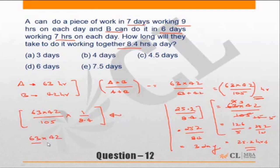So you are better off writing it like this: 63 into 42 upon 105 into 1 upon 8.4, which is nothing but 10 by 84. So 42×2 is 84, 2×1s are 2, 2×5s are 10. This is 21, 21 into 3 is 63, which is equal to 3 days.